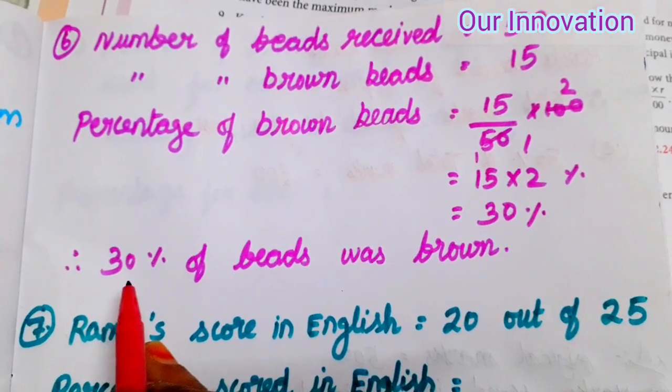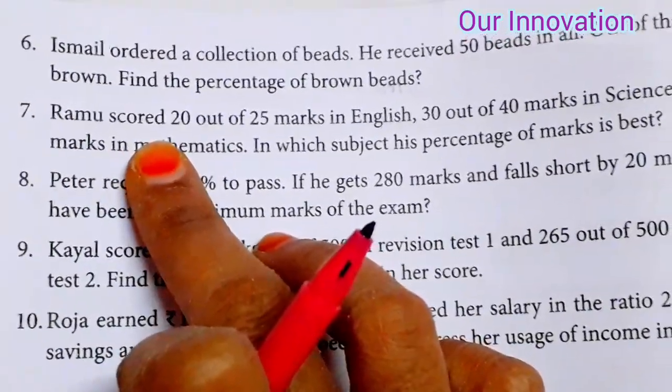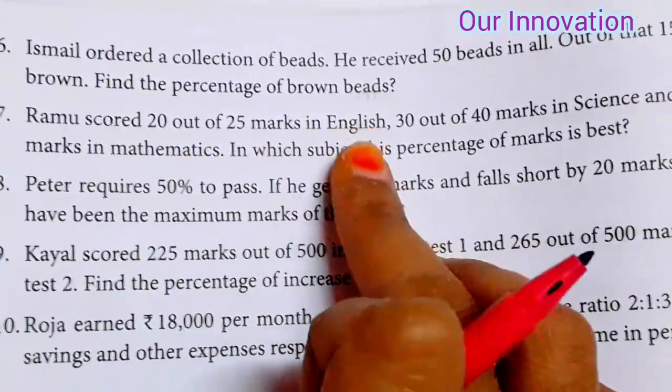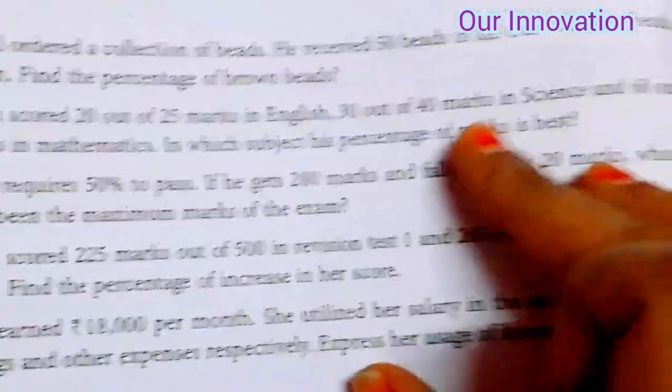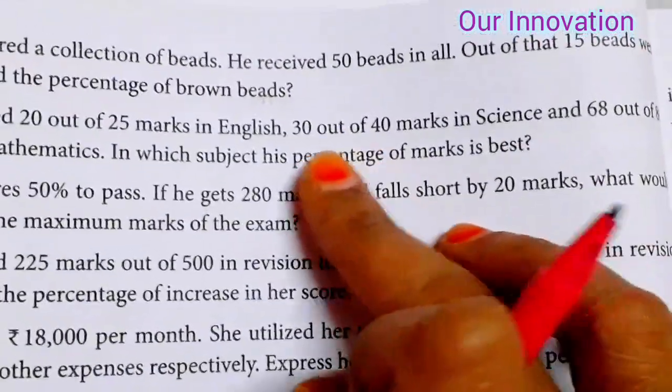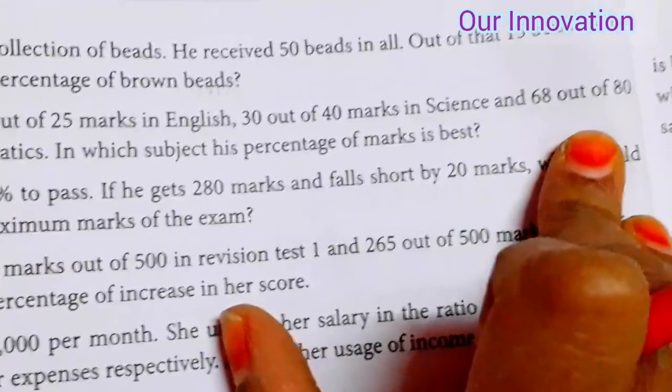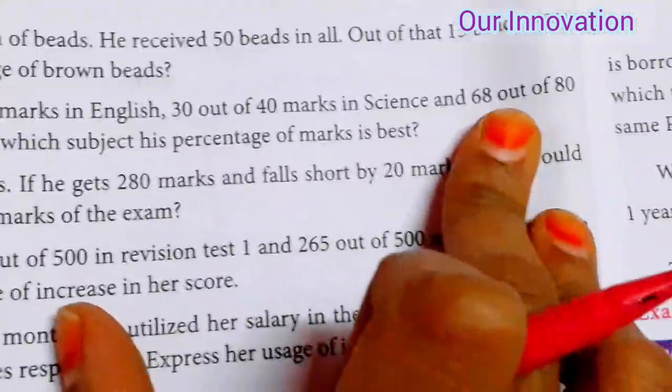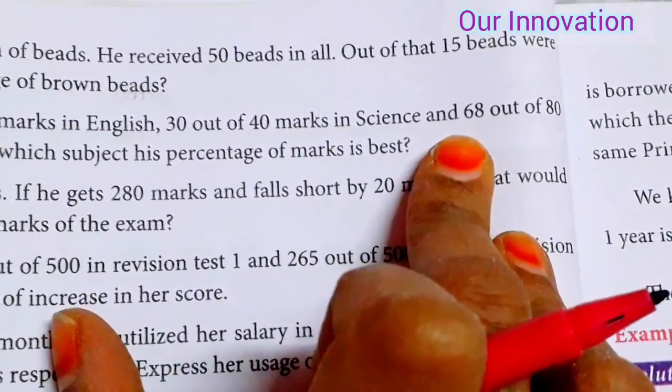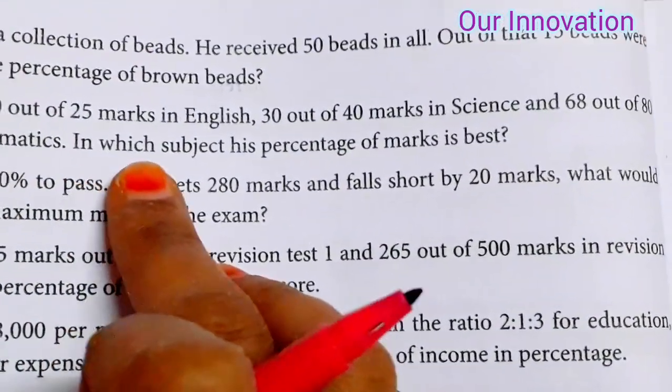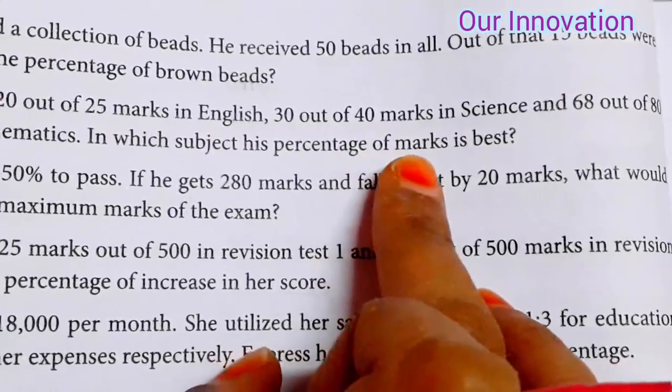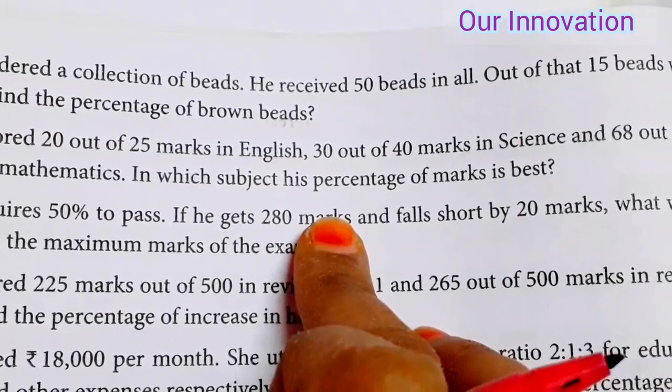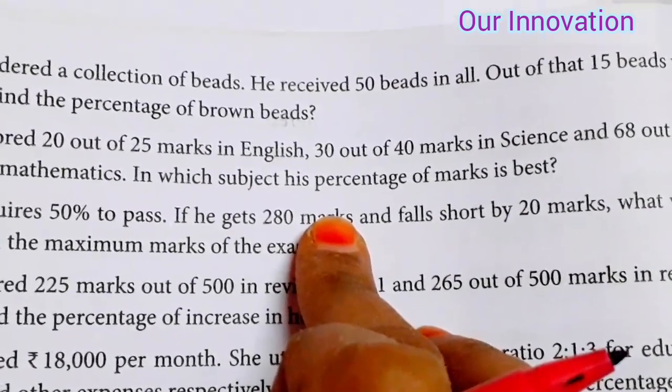Therefore, 30 percentage of beads were brown. Problem 7: Ramu scored 20 out of 25 marks in English, 30 out of 40 in Science, and 68 out of 80 in Mathematics. In which subject is his percentage of marks the best?